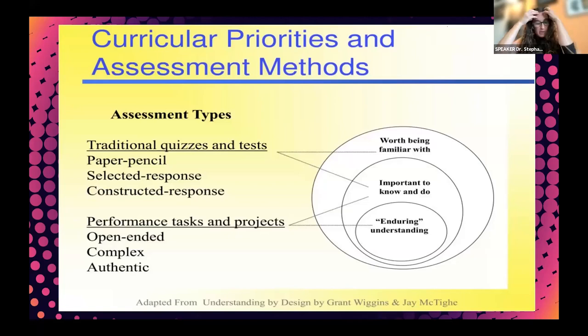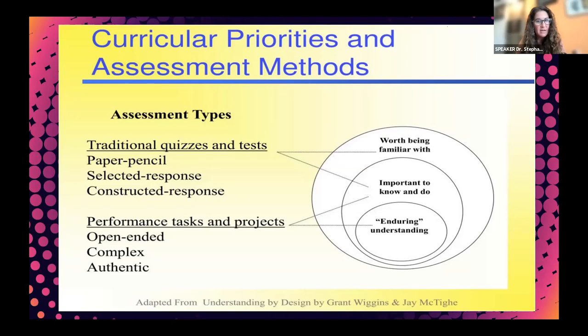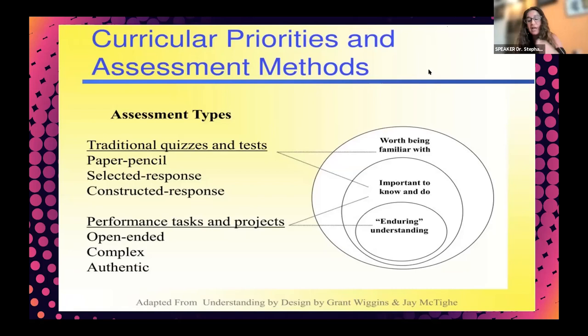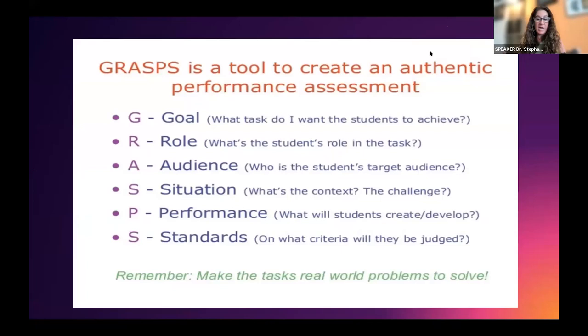I like this graphic because it helps us think about these enduring understandings — the big ideas that I want students to walk away from my course with. Notice that circle in the middle: we call those enduring understandings. Versus 'important to know and be able to do' and 'worth being familiar with.' Those enduring understandings are where we focus authentic assessments, while 'worth being familiar with' can be our traditional quizzes and tests, because students have access to that information very easily at their fingertips.